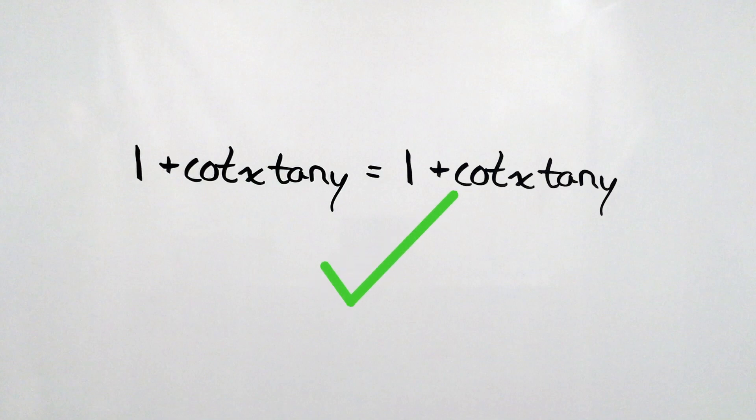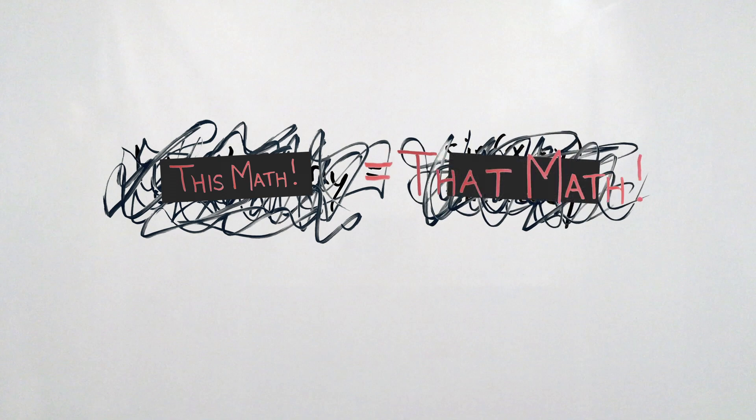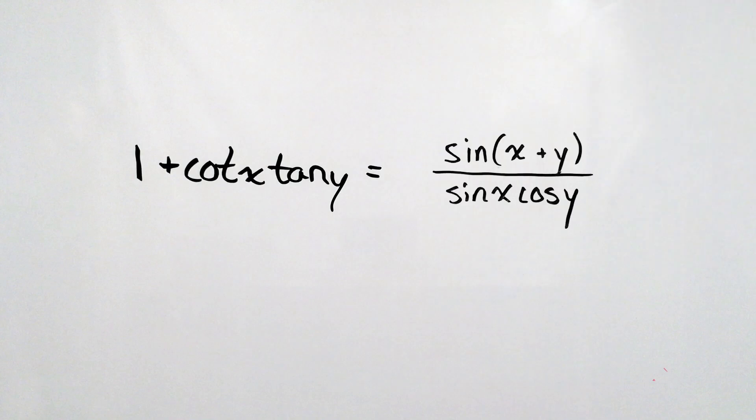And this is the part of the trig identity problem where you just sit back and enjoy the feeling of showing that two really complex-looking mathematical expressions are in fact equal. And you want to go tell a friend, but you know that no one's really going to care. So instead, you just like this video and leave a comment if you have any questions. Thanks for watching.